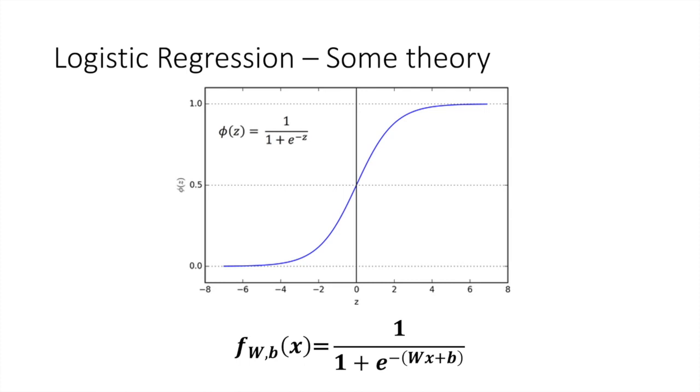By looking at the graph of a standard logistic function, we can see how well it fits our classification purposes. If we optimize the values w and b appropriately, we could interpret the output of f of x as the probability of yi being positive. For example, if it is higher or equal to threshold 0.5, we should say that the class is positive, otherwise it's negative.